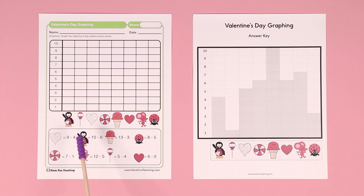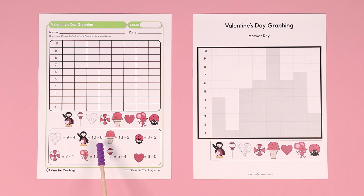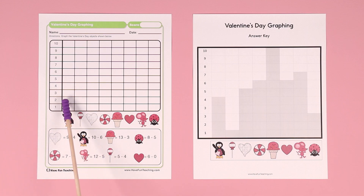So you find the penguin, and the penguin equals 10 minus 6. 10 minus 6 equals 4, so you color in 4 of the boxes.